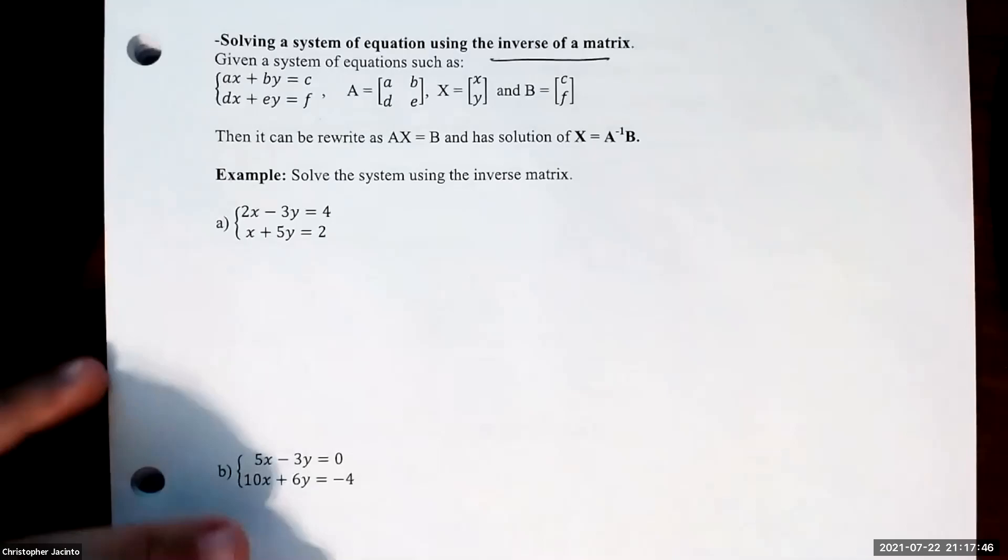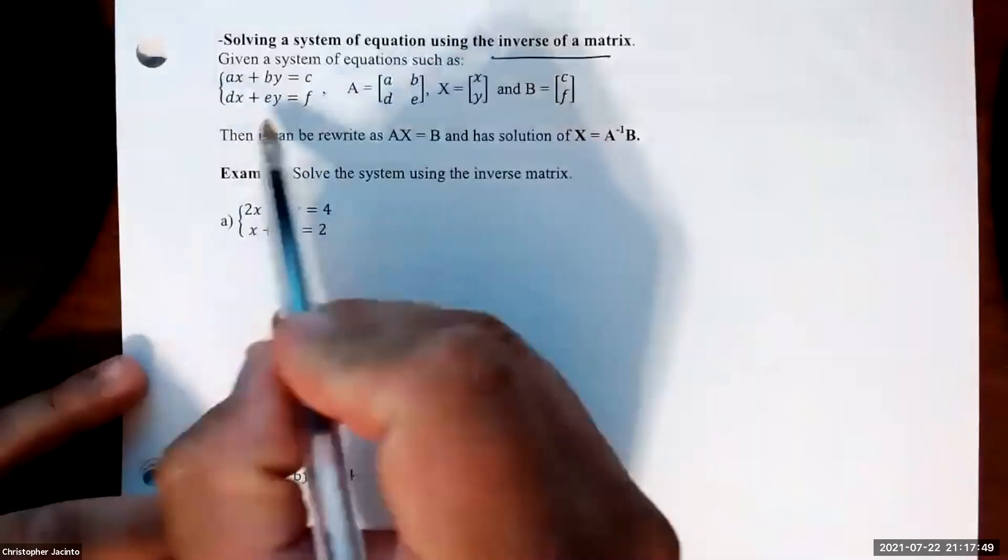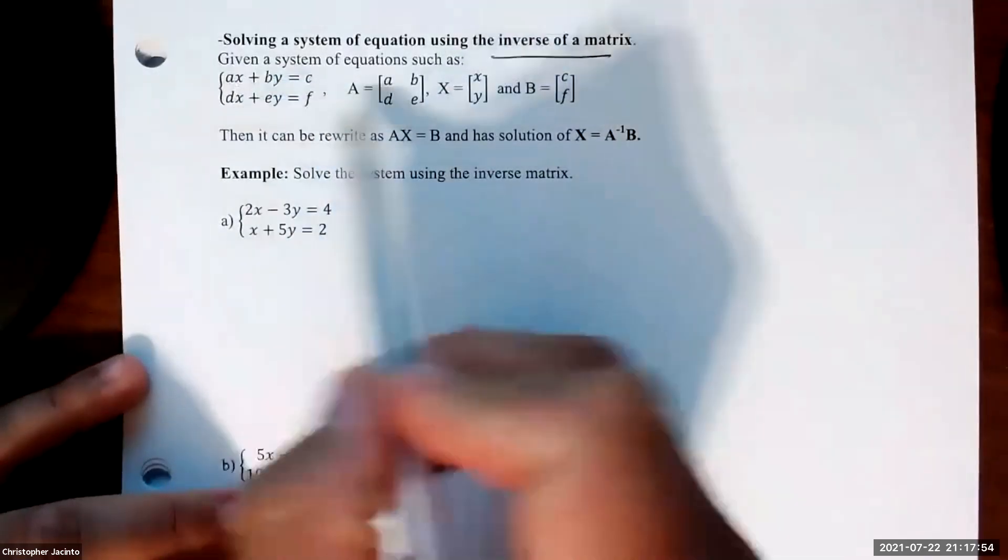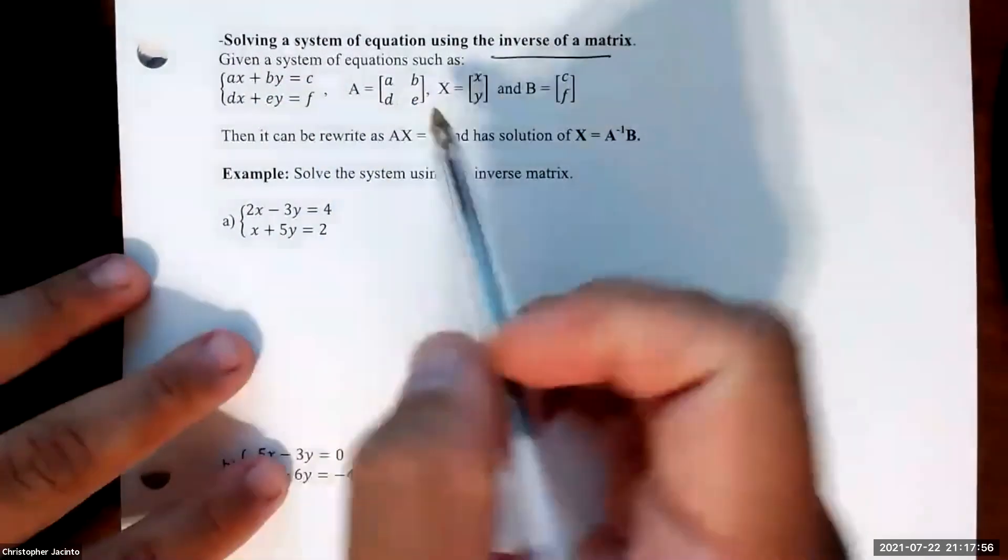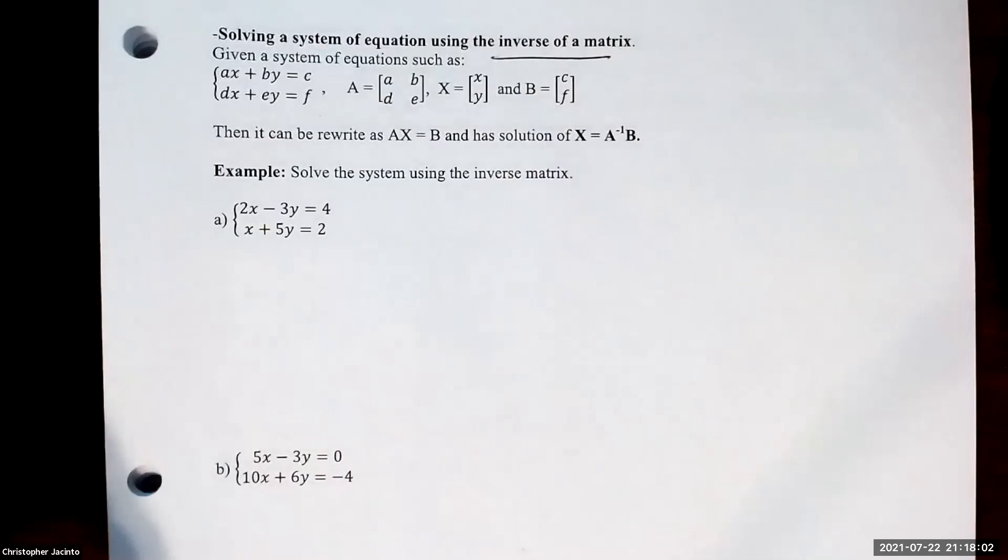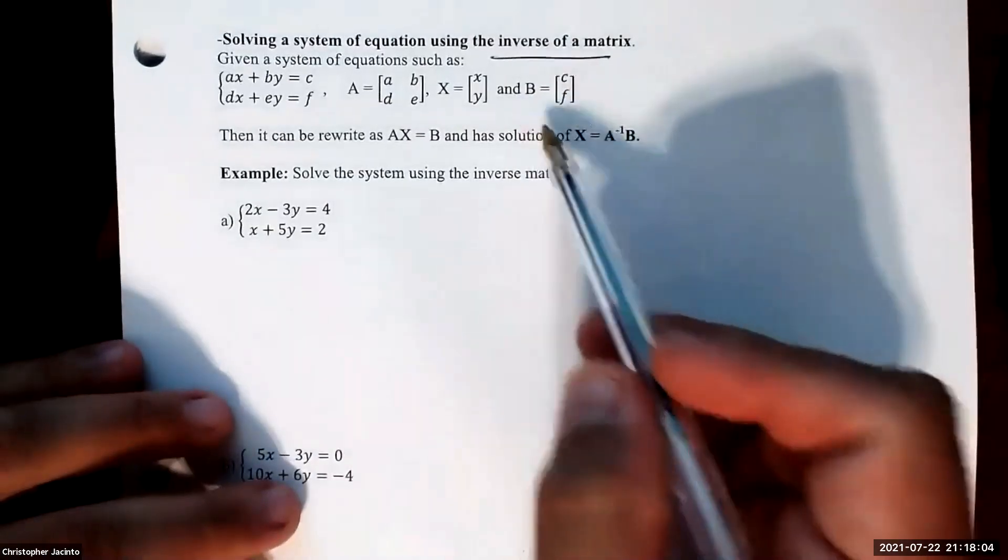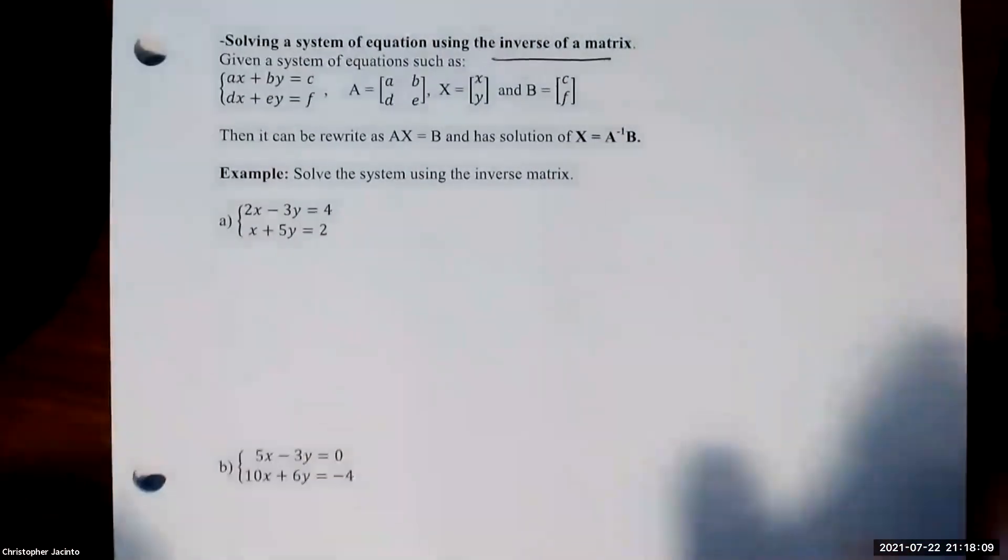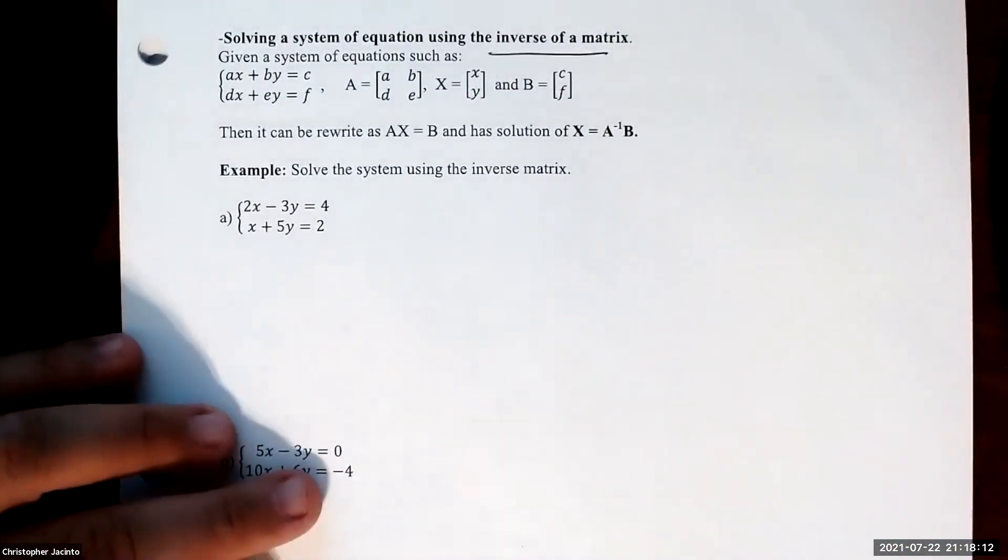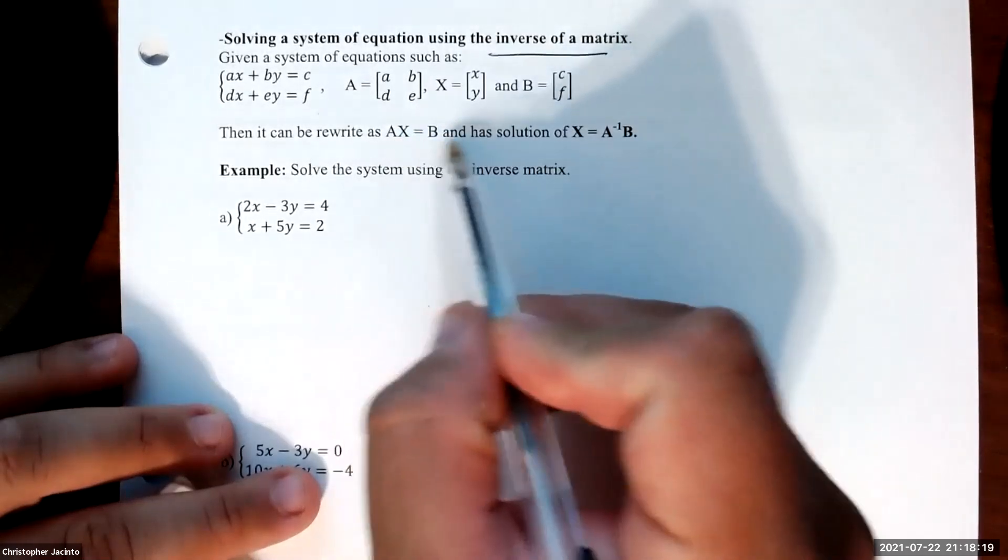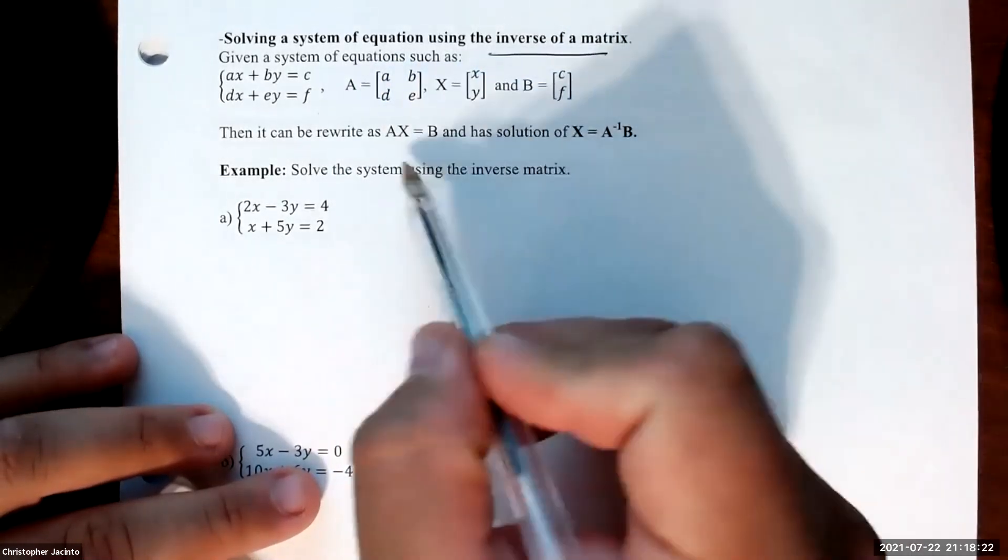How we can do this is we'll give a system of equations. Matrix A is the coefficients (a, b, d, e), matrix X is just the variables (x and y), and matrix B is what they're equal to (c and f). Then we can rewrite this as A times X equals B.